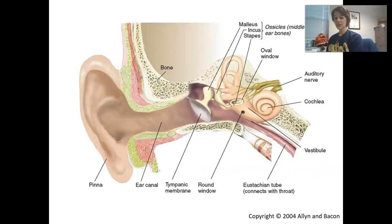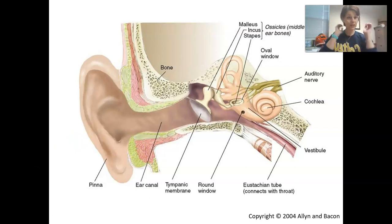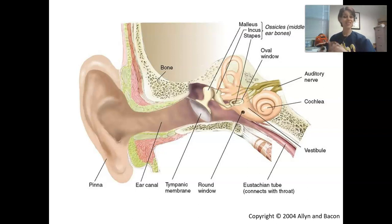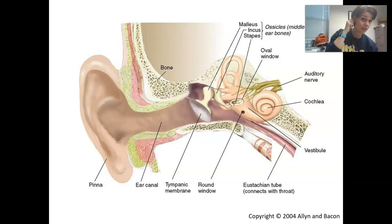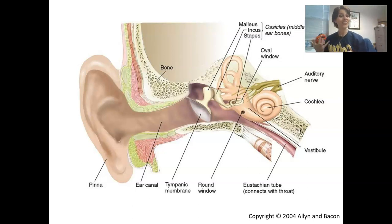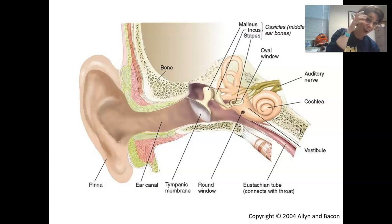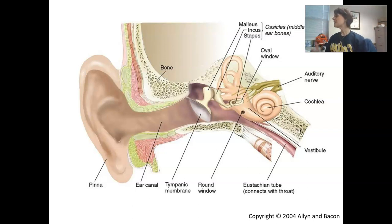Now we're going to talk about the different parts of the ear. Most people think of the part of the ear they can wiggle as 'the ear' — that is not actually true. Our ears are a much bigger structure than just this. The part you can see is our pinna, and it's part of the outer ear. The pinna is the external ear that we can see, and its job is to funnel in sounds from the environment.